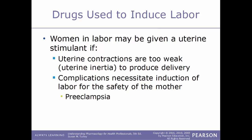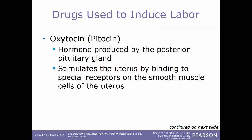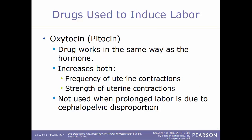Drugs used to induce labor: a woman in labor may be given a uterine stimulant if uterine contractions are too weak to produce delivery — a condition called uterine inertia. These stimulants may also be given for complications such as preeclampsia. The hormone naturally produced by the posterior pituitary gland is oxytocin, also known by its trade name Pitocin. This synthetic version acts by stimulating the uterus by binding to receptors on smooth muscle cells, increasing both the frequency and strength of contractions.